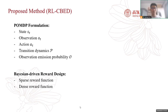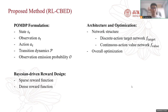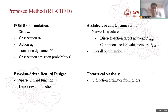We introduce two kinds of Bayesian-driven reward functions. We also design a novel neural network architecture for both discrete and continuous action spaces in our setting, and introduce its overall optimization procedure. Finally, we show that the RL agent can interact with the environment without need for updating the causal discovery model during the training process.